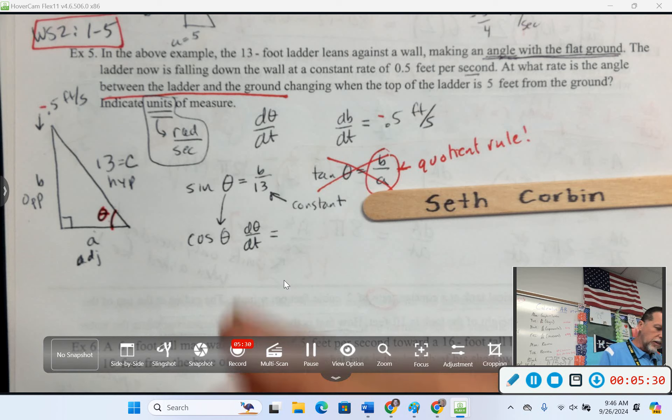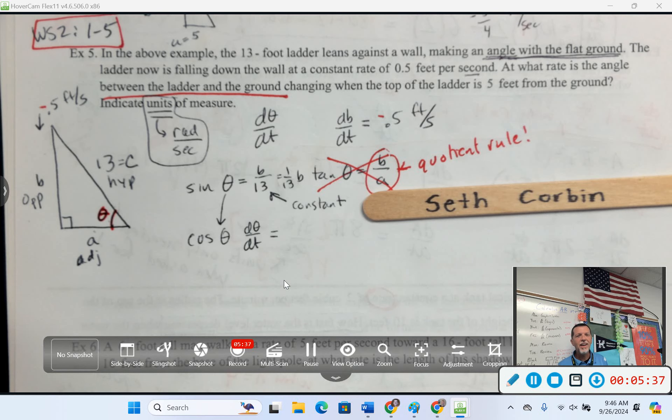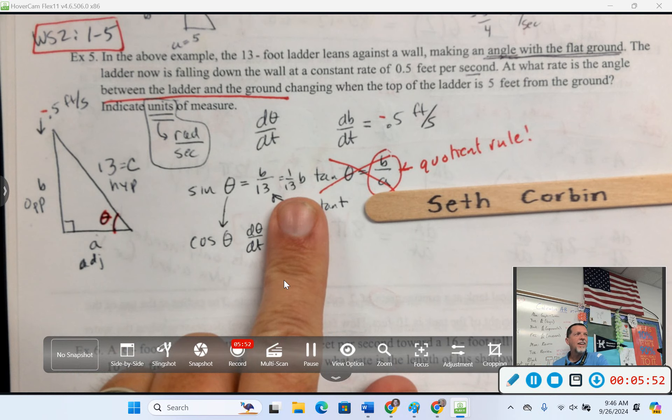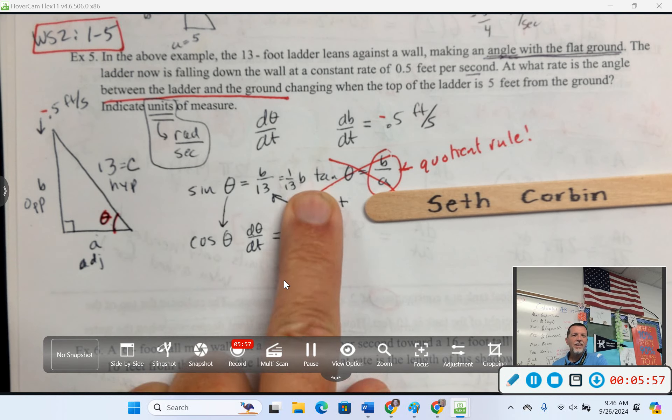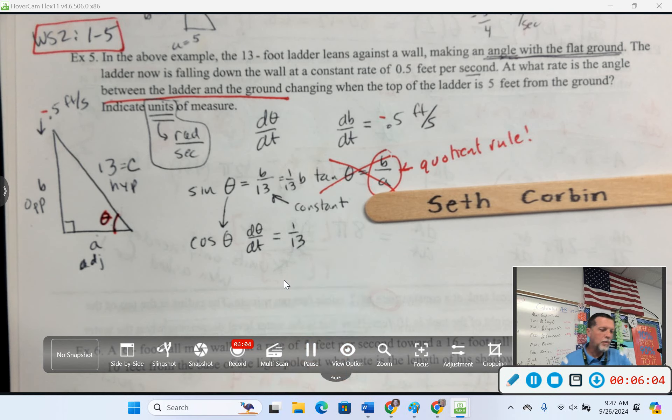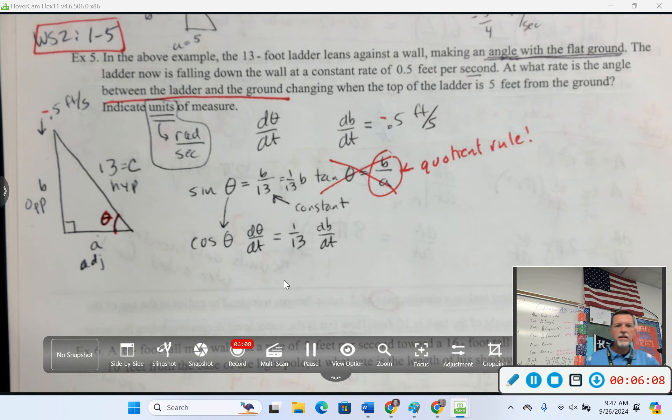Seth, how about the other side? What's the derivative of, I'll even make it easier for you, what's the derivative of 1/13 B? So, the 1/13 just goes along for the ride. The derivative of B would just be 1, but then chain rule. B prime or dB/dt.